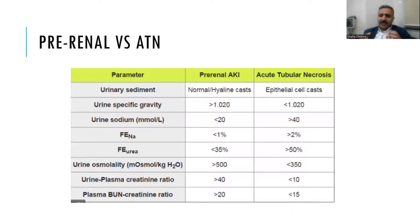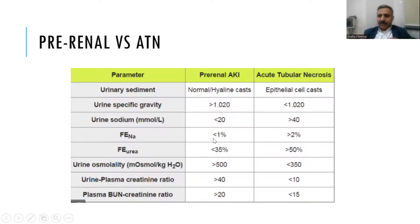This is a very important USMLE question: differentiating pre-renal azotemia from ATN. Urinary sediment and specific gravity help — pre-renal has higher specific gravity and higher osmolality due to dehydration. But the most important test is the FENa. Urinary sodium and FENa are less than 1% in pre-renal azotemia because the body is conserving sodium to reabsorb water. Urine osmolality and specific gravity increase because there is a small amount of concentrated urine.